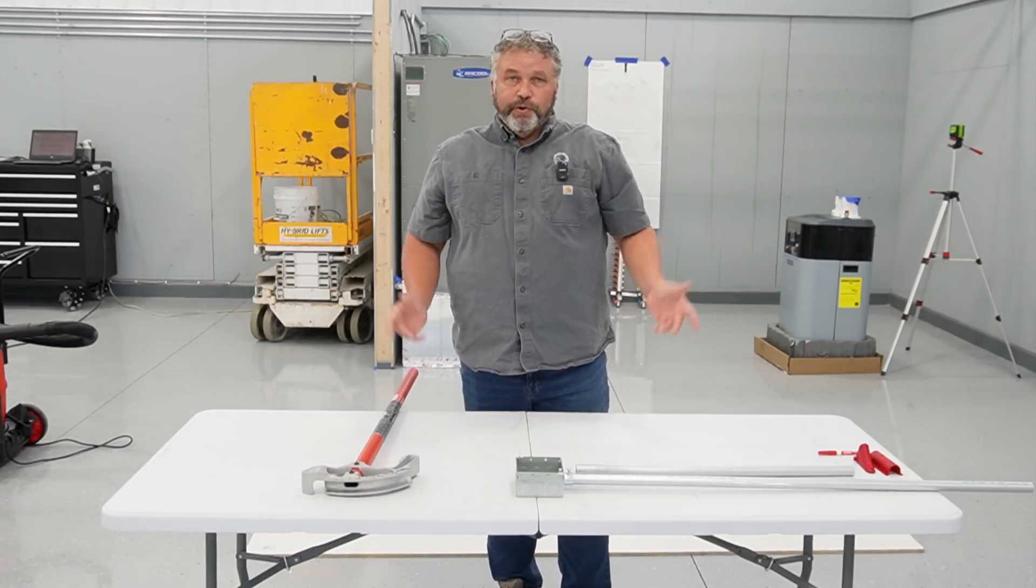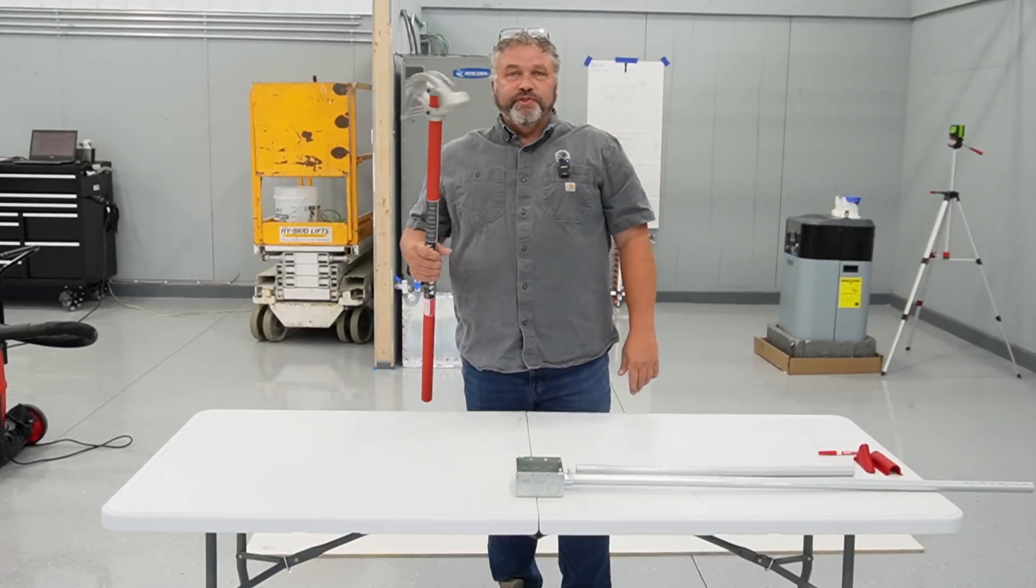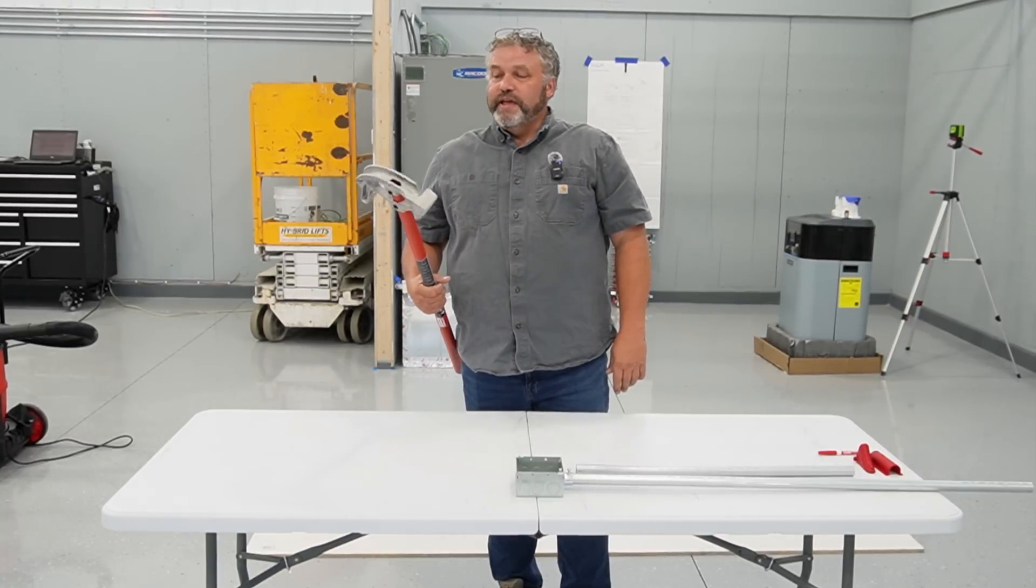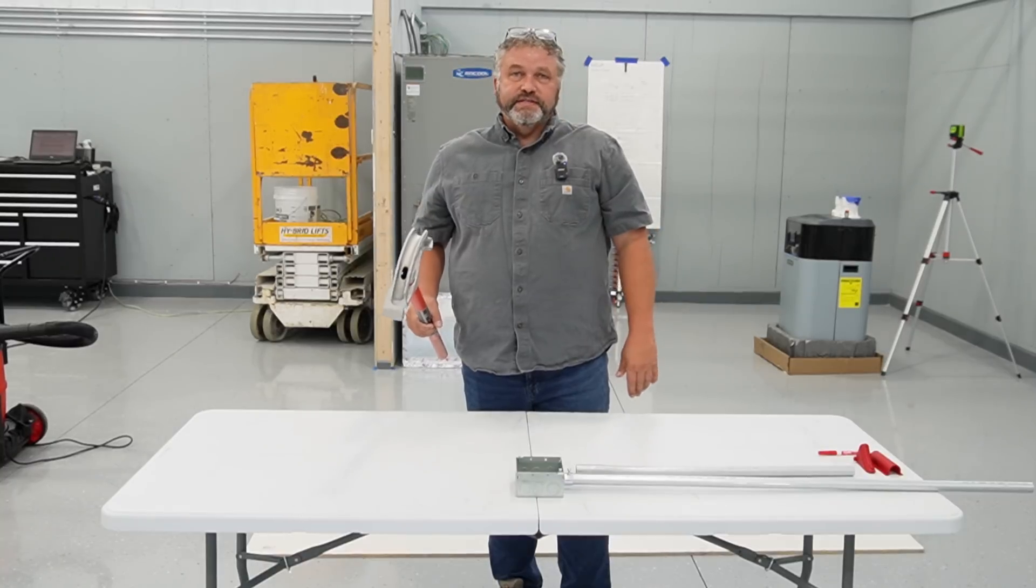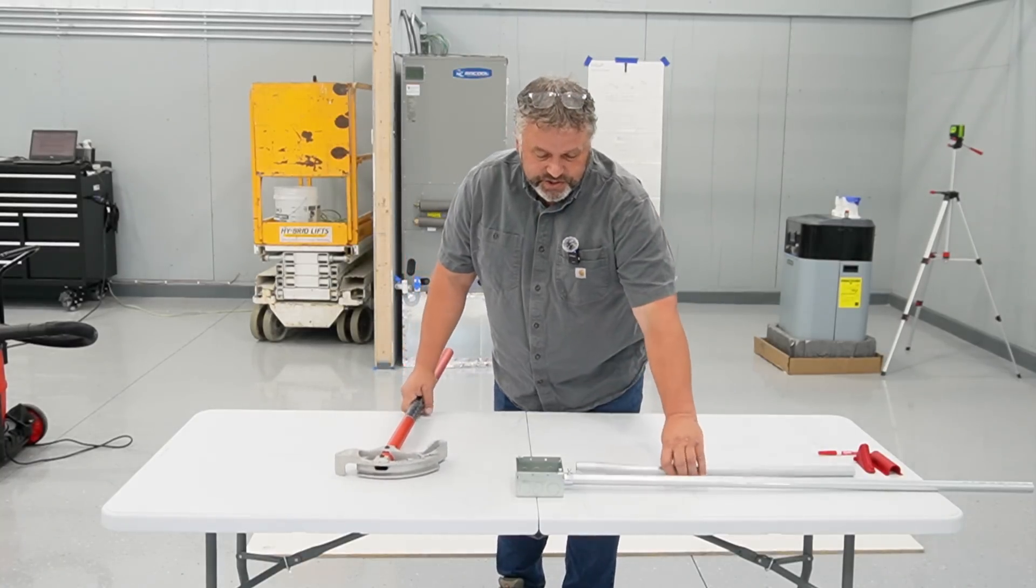So a pro who uses a manual bender all the time could probably do these with their eyes closed, and if they can't, they can purchase a dedicated piece of equipment for a couple hundred dollars that will create that offset jog.